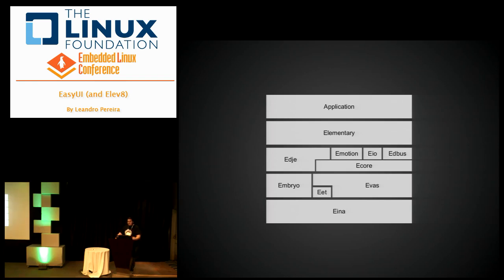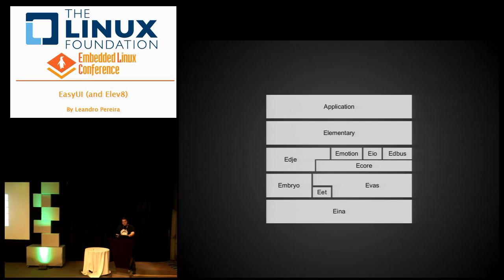You have your application, you have Elementary which is our widget set, Edge which is our layout library, Emotion which is a media playback library, EIO which offers asynchronous IO, EDBUS which is a D-BUS interface, E-Core Embryo which is a programming language used together with Edge, EET which is a data serialization and deserialization library, EVAS which is Canvas, and INA which is a data structure library.